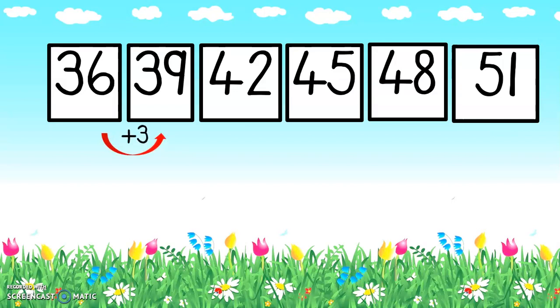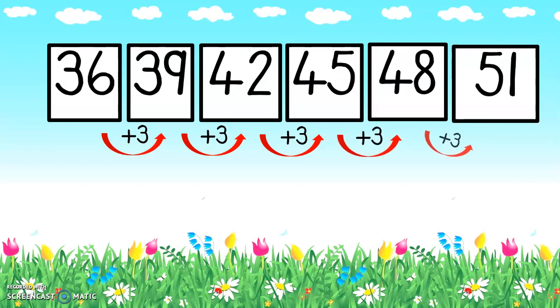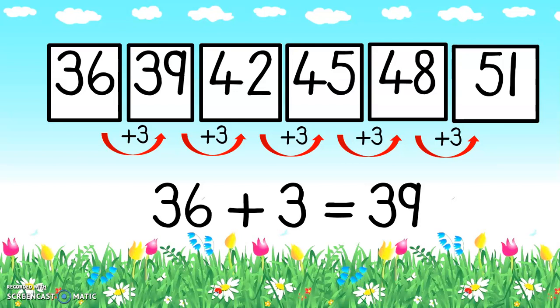So thirty-six plus three gives me thirty-nine. What will I add next? Another three, because our number pattern is counting in threes. So thirty-nine plus three equals forty-two. Plus three equals forty-five. Plus another three — forty-eight. Plus our last three — fifty-one. You can carry on to make a longer number pattern in threes. So we said thirty-six plus three equals thirty-nine, and we carry on like that. Our number pattern is counting in threes. Count with me: thirty-six, thirty-nine, forty-two, forty-five, forty-eight, fifty-one. So what did I do every time? I added three for my number pattern — counting in threes.